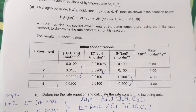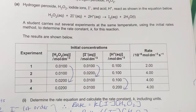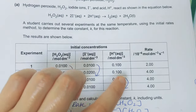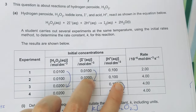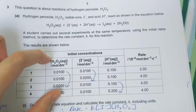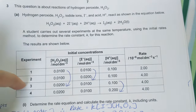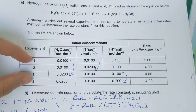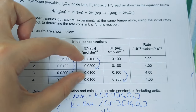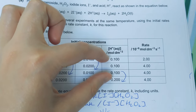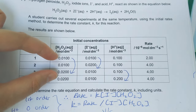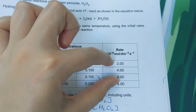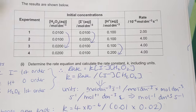This next question has an initial rates table asking us to find the rate equation, rate constant, and its units. We take each reactant one by one. To find the order with respect to hydrogen peroxide, we find two experiments where iodide and H⁺ concentrations remain constant — that's experiments one and three. Iodide is constant at 0.01 and H⁺ is constant at 0.1. The peroxide doubles, and the rate doubles as well, so the reaction is first order with respect to peroxide.